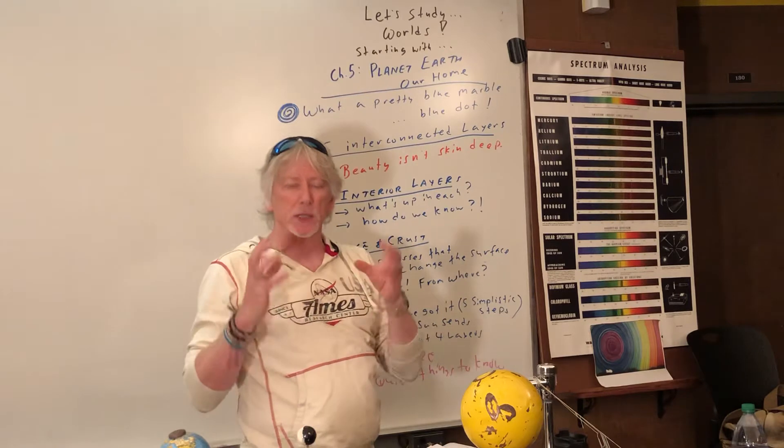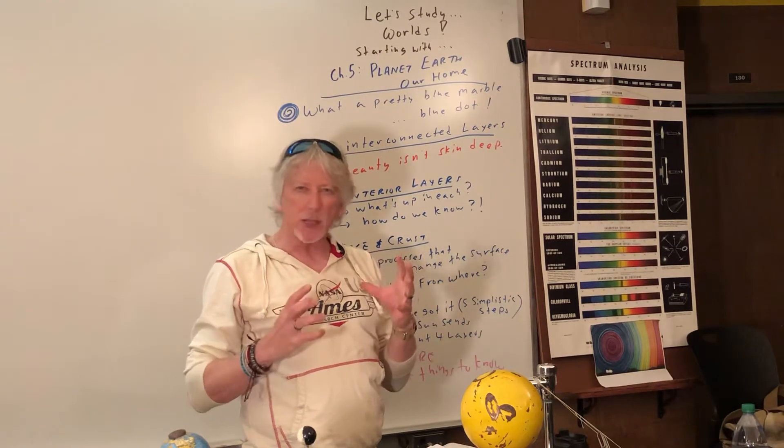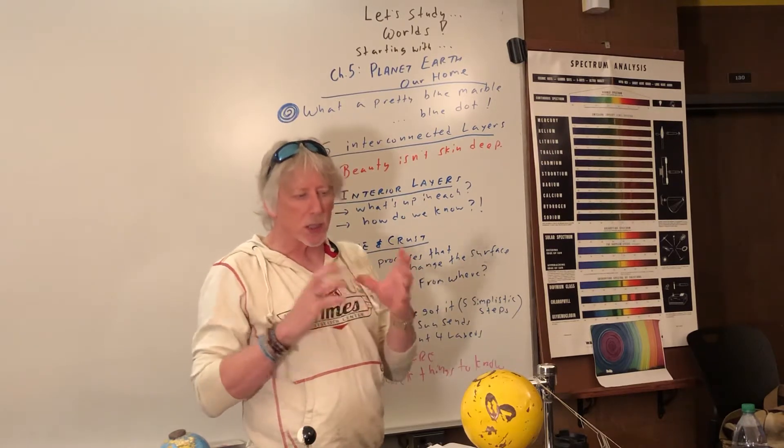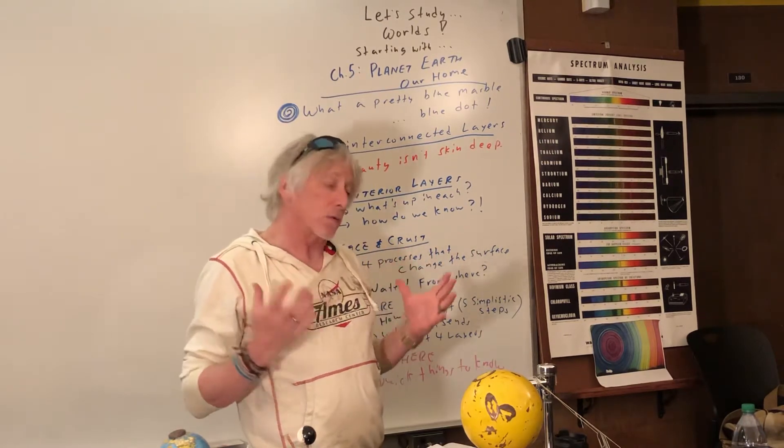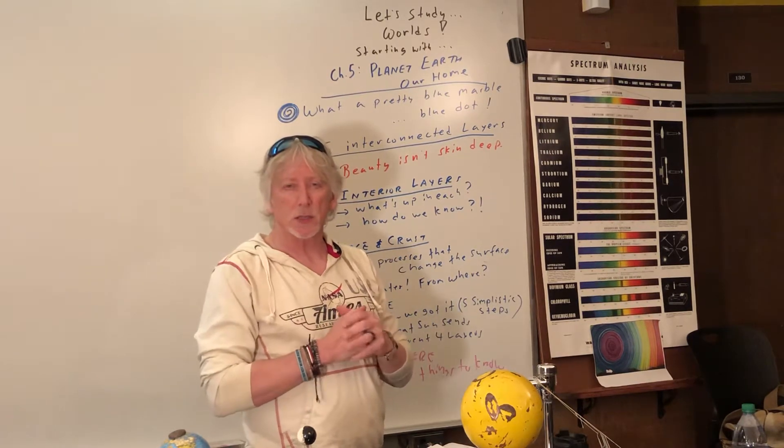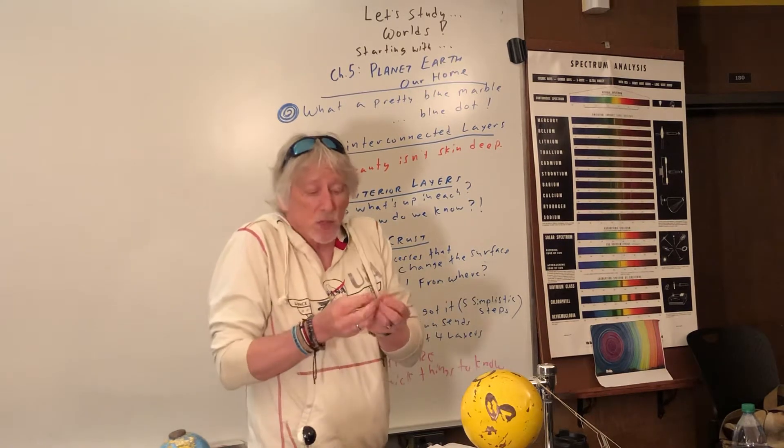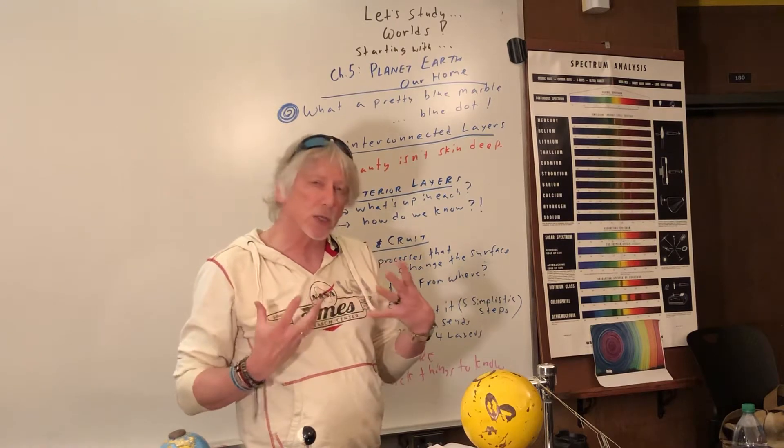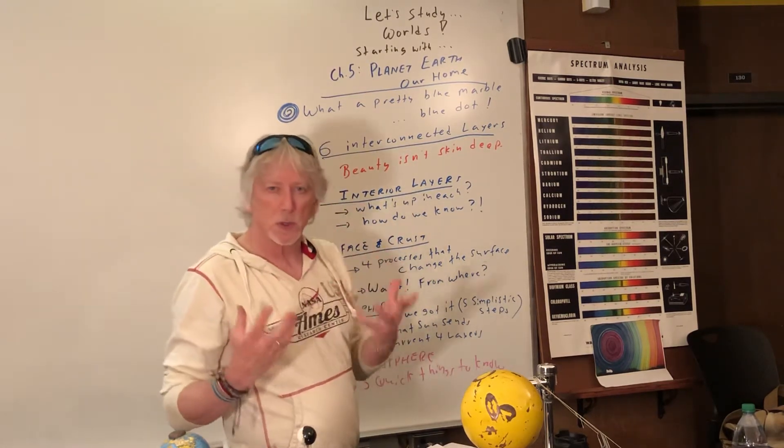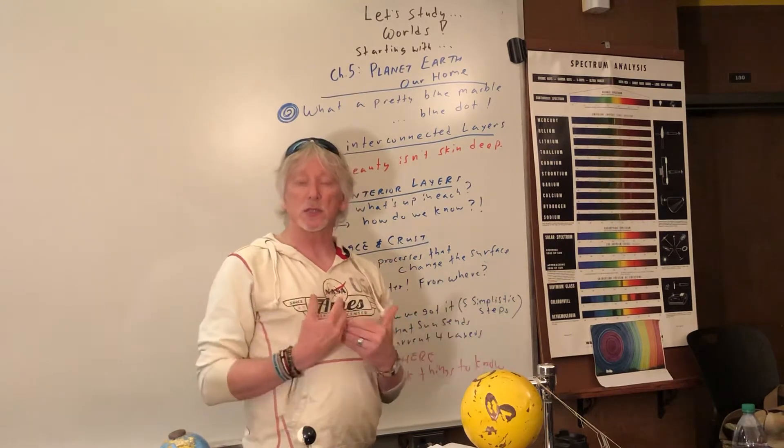We're going to start with Earth, because if you understand Earth, Earth is a happening place. And if you study its interconnectedness, we can quickly look at other worlds. One of our questions that we always like to ask is, is there life elsewhere, either simple microbial life, intelligent life, complex organisms? What's out there? Or are we just the center of it all?